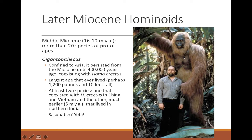Gigantopithecus was a vegetarian, showing you can achieve very large body size on an entirely plant-based diet. Its extinction was likely caused by habitat destruction and competition from hominins — something this large would also have been sought after for food, as it could feed a lot of people.